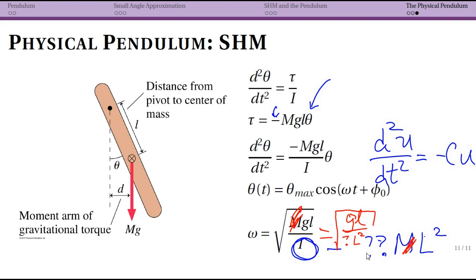So again the physical pendulum, as long as we're talking about a small angle of motion again, is going to have simple harmonic motion because the force of gravity acting not at the pivot point gives you a restoring force.